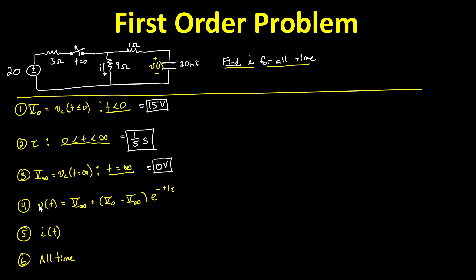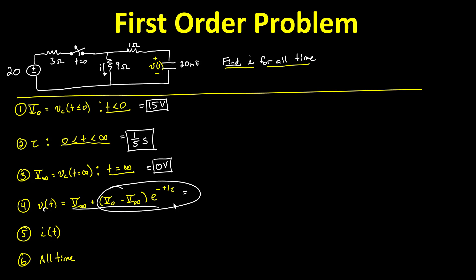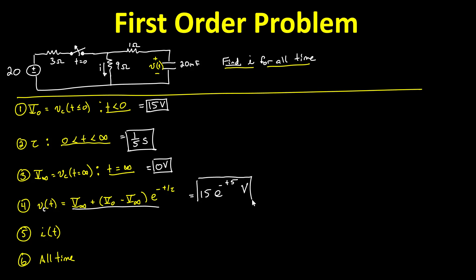Now we tackle the plug-and-chug equation for the capacitor voltage. Let's verify it: at t = 0, e^0 = 1, giving V(∞) + (V_naught − V(∞)) = V_naught ✓. For large t, e^(−large) → 0, leaving just V(∞) ✓. Plugging in our numbers: V(t) = 0 + (15 − 0)·e^(−t/(1/5)) = 15·e^(−5t) volts. That is the voltage across the capacitor for time greater than or equal to zero.